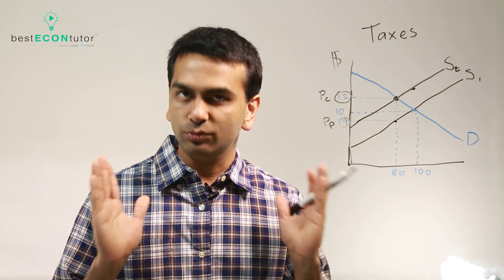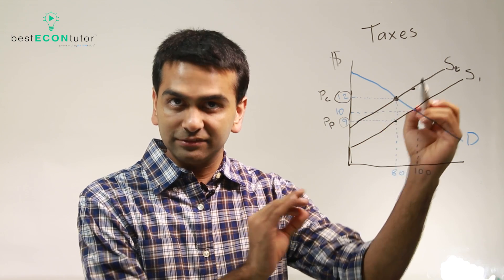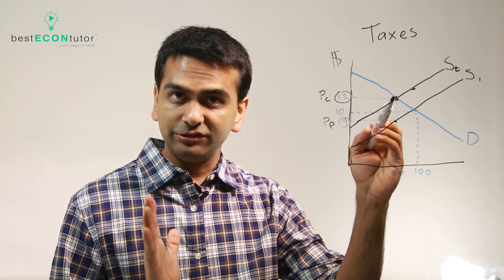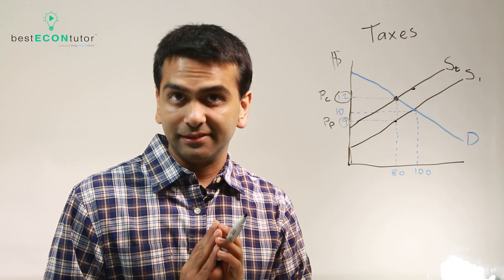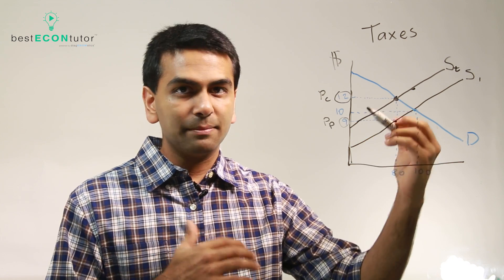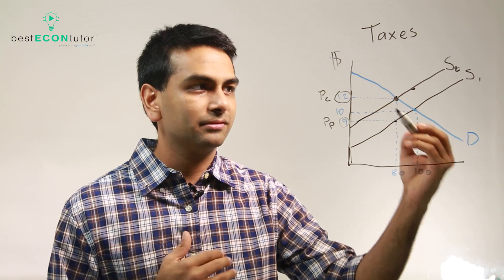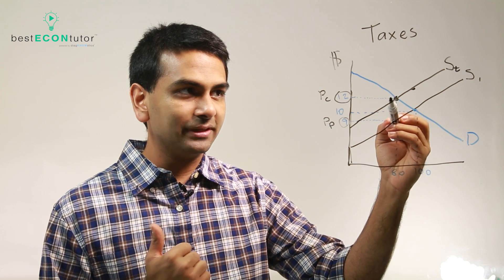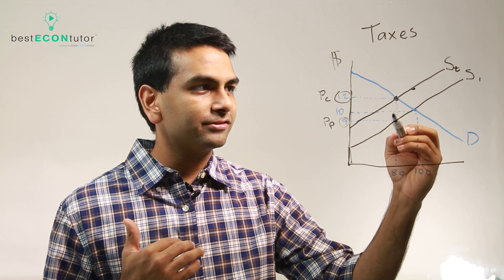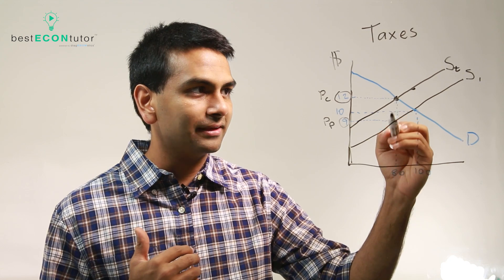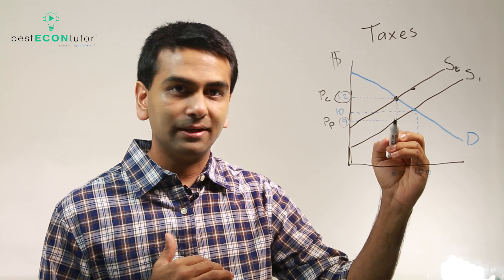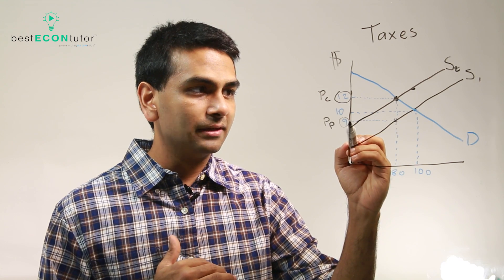So just to recap: a $3 tax shifts the supply curve up by $3 everywhere. We have a new supply curve and we look at where the new intersection is. That intersection is the price for the customer — it's typically going to be higher than the old price, but not by the full amount of the tax. For the producer's price, it's the new consumer price minus the tax amount. That gets you back on to the old supply curve because this gap is the tax amount, $3. So $12 minus $3 gets you $9. That's how you find the producer's price.